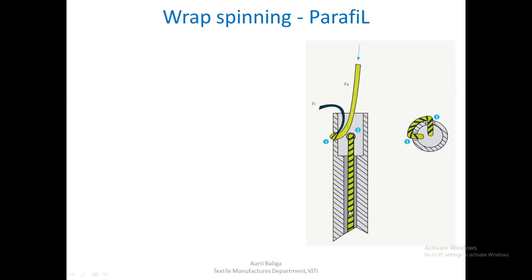This slide shows the passage of both types of fibres. This is the filament and these are the staple fibres coming from the drafting system, which may be any kind of fibres as we will see shortly.